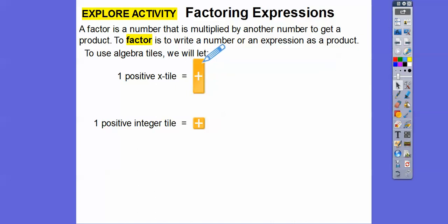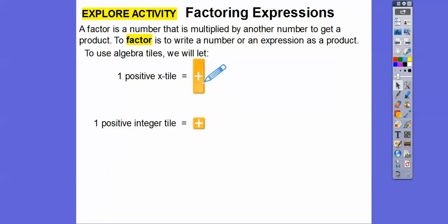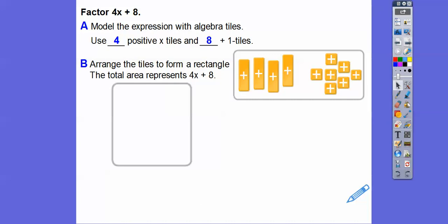With algebra tiles, we're going to use the long rectangle tile — let this represent 1X, and the small square represents plus 1. If I had X plus 5, it would be 1 long tile and 5 small tiles. If I had 2X plus 5, it would be 2 long tiles and 5 small tiles. So here we're going to factor 4X plus 8 and model it using algebra tiles: 4 positive X tiles and 8 one-tiles. Factoring is asking what times what equals 4X plus 8. If we arrange these into a rectangle, we can show that, since the area of a rectangle equals length times width.